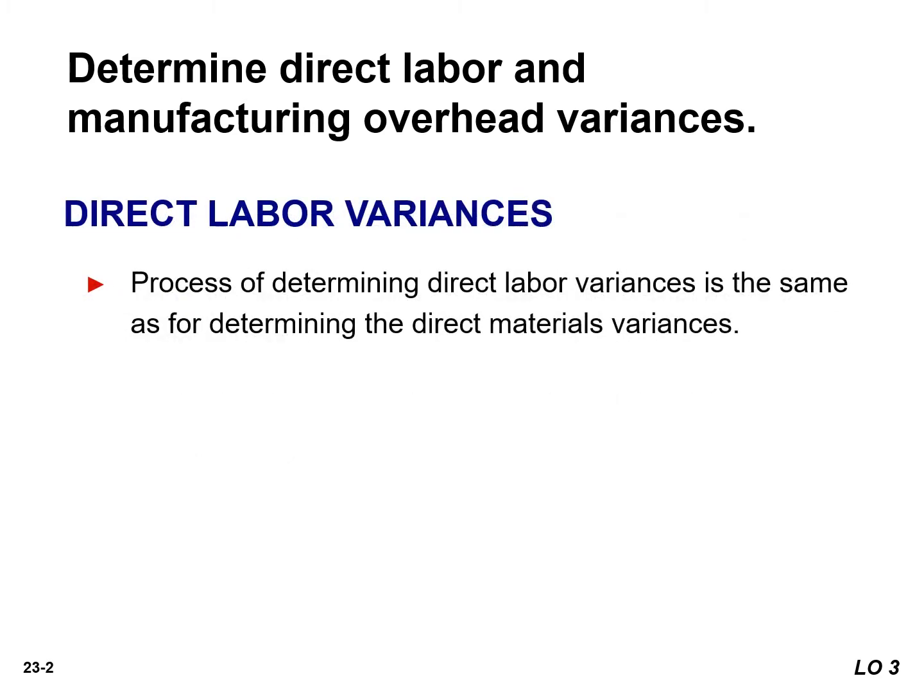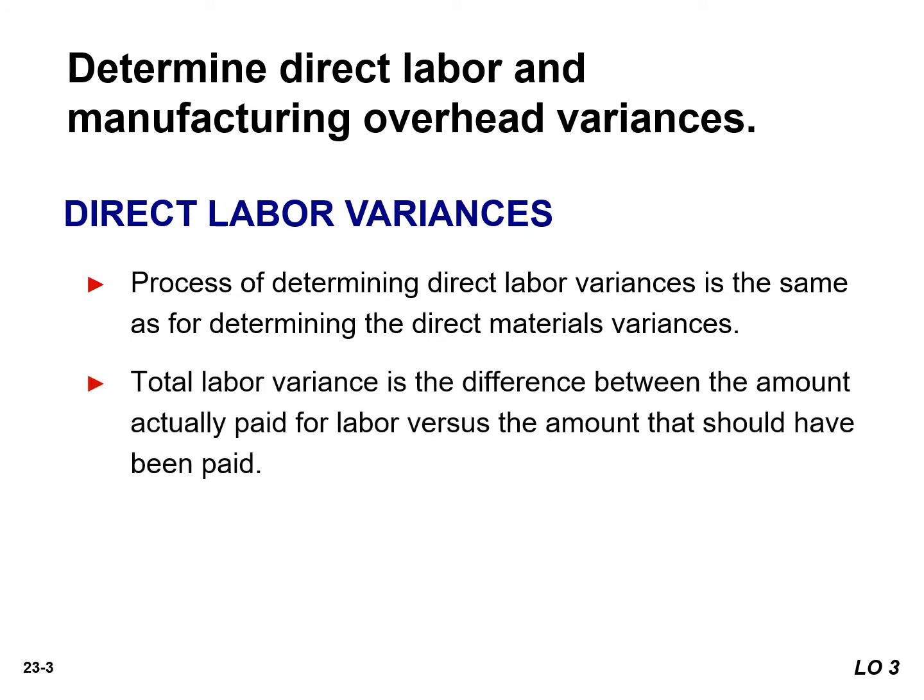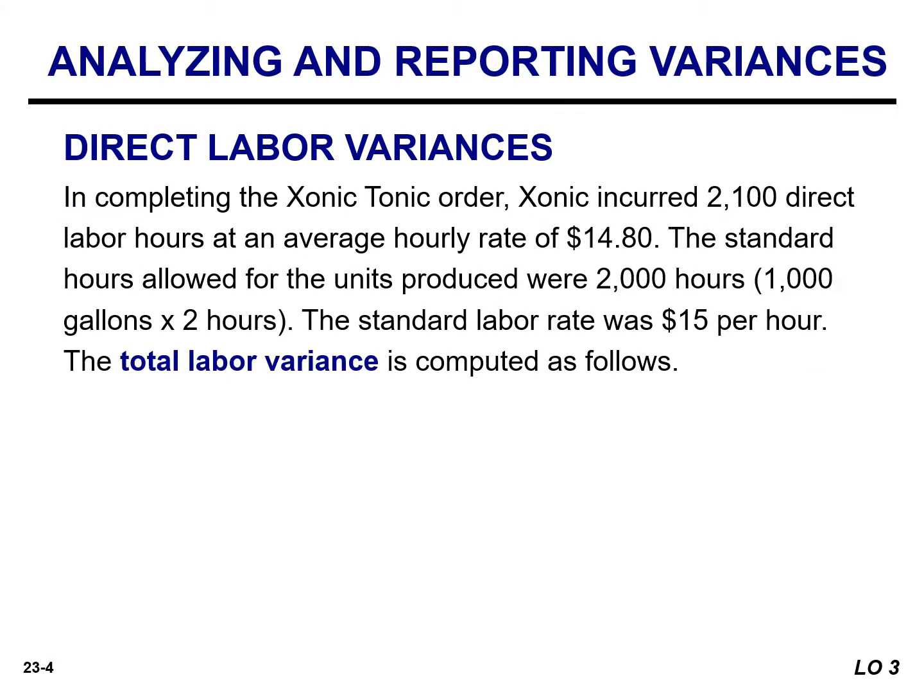The process of determining the direct labor variance is the same as for determining the direct materials variance. The total labor variance is calculated as the difference between the amount actually paid for labor and the amount that should have been paid based on standards. In completing the order, the company incurred 2,100 direct labor hours at an average hourly rate of $14.80. The standard hours allowed for the units produced were 2,000 hours, and the standard labor rate was $15 per hour.